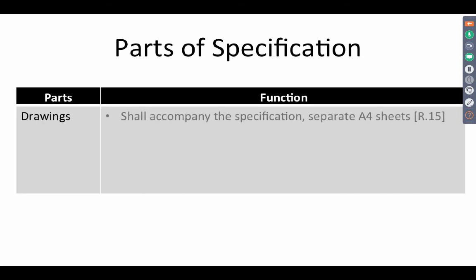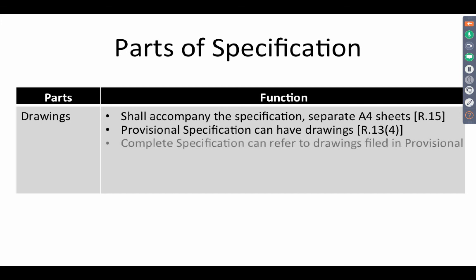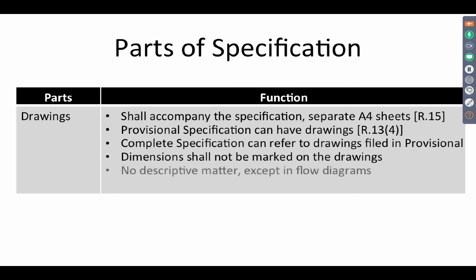Drawings shall accompany the specification and shall be on specific separate sheets. Provisionals can have drawings, and a complete specification can refer to the drawings filed in the provisional. Dimensions shall not be marked in the drawings — references should be by an arrow and should be outside the drawing. The only exception is in flow diagrams, where descriptive matter can be mentioned.